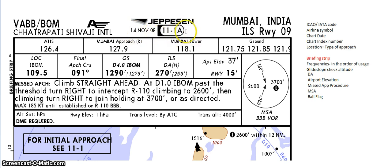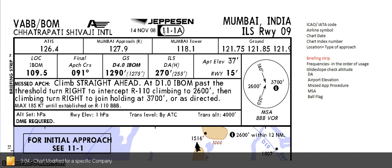This here is the chart index number, and the box it contains is also special. A normal Jepsen chart would just have an oval box, but here on the left side you can see a dark shaded side with a rectangular end. This means the chart has been modified for a specific company — in this case, for Air India.